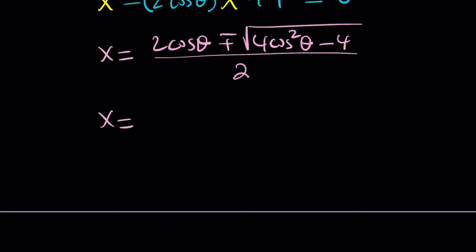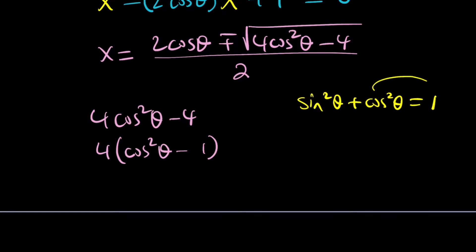Here's the interesting part. 4 cosine squared minus 4 can actually be factored. So let me go ahead and do that first. 4 cosine squared theta minus 4 can be written as 4 times cosine squared theta minus 1. Wait a minute. We have a Pythagorean identity, don't we? And that looks like this. Sine squared theta plus cosine squared theta equals 1. So 1 minus cosine squared is going to be the same as sine squared and vice versa.